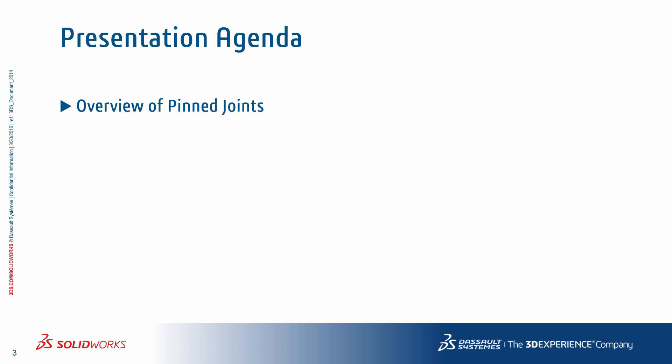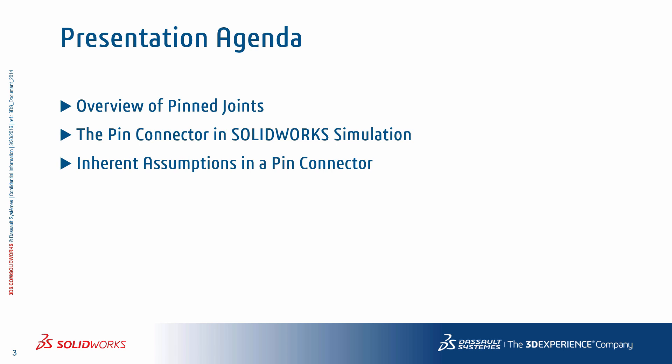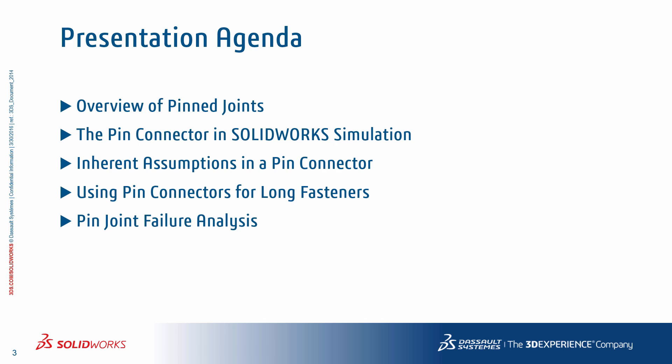We'll first review the basic concepts and terms related to pin or riveted joints. We'll then introduce and review the interface and menu options for the pin connectors in Solidworks Simulation. We'll also look at the assumptions that are inherent in the pin connector features, since it's important to understand what these assumptions are and what's going on behind the scenes. One important assumption is that pin connectors represent a short fastener with respect to the features they're interacting with. And finally, we'll conclude with a general discussion of pin joint failure.